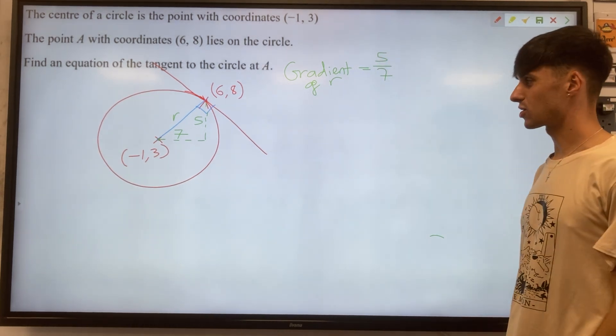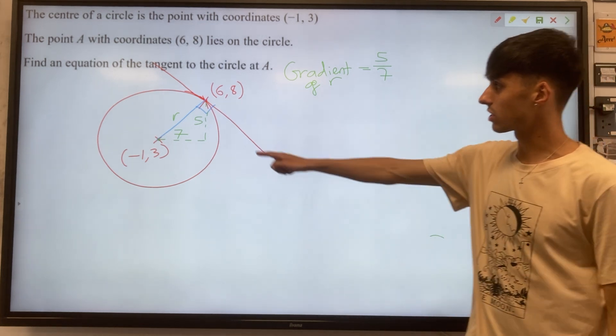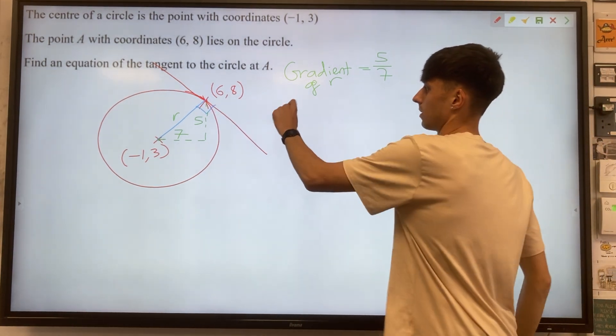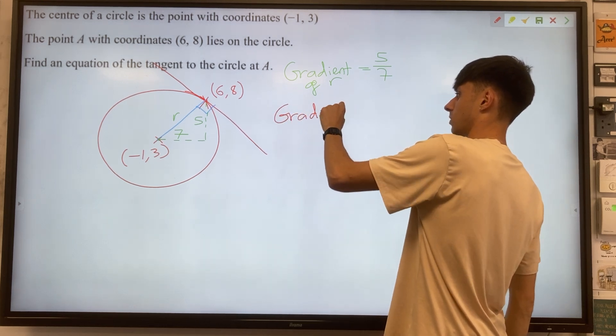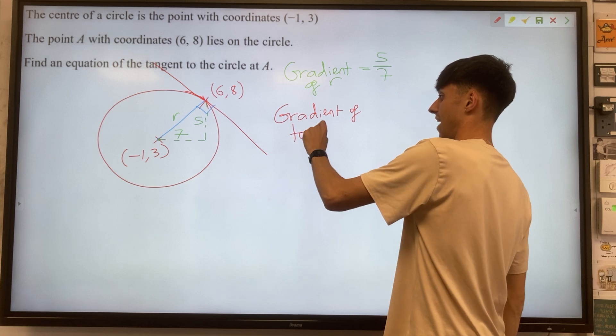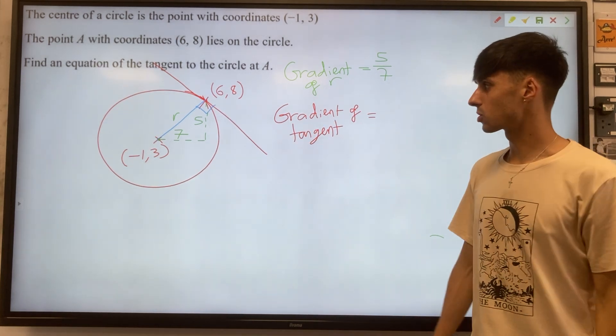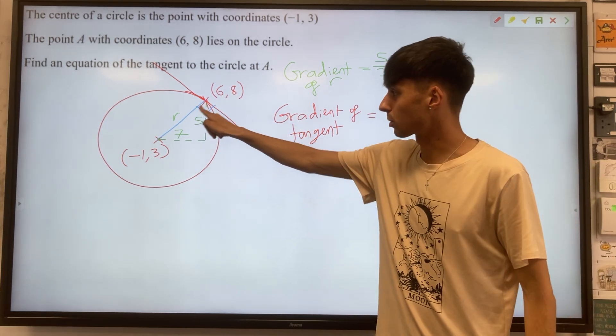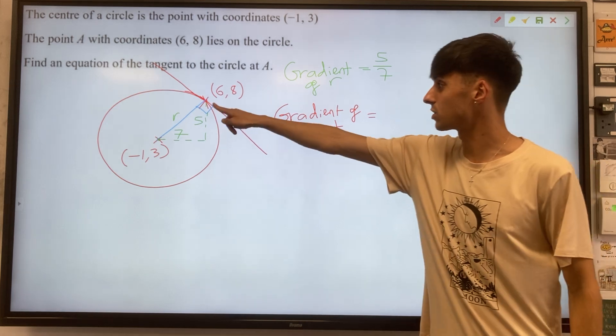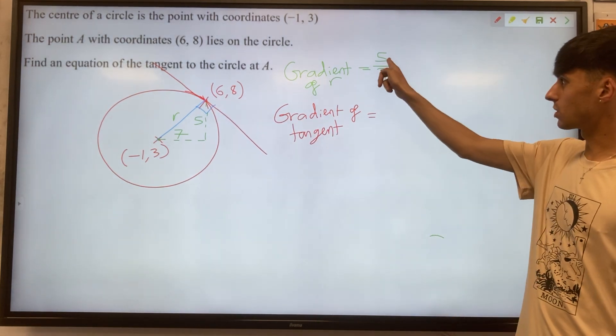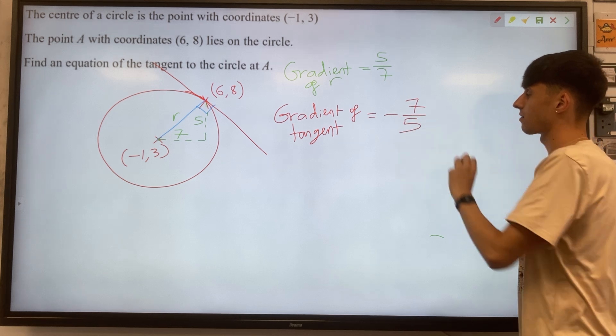But the important thing we're going to use is our circle theorem. And this tells us the gradient of the tangent at that point. Most importantly that they're negative reciprocals of one another, those two gradients, because they meet at 90 degrees. So that means the gradient of the tangent must be minus 7 over 5.